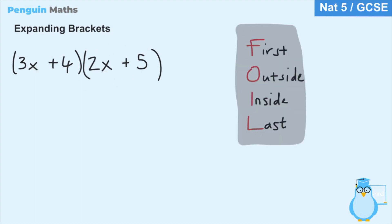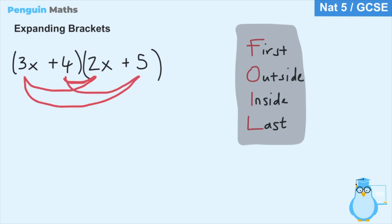The easiest way to do this is by following FOIL, which stands for first, outside, inside, and last. First means we multiply the two first terms within the brackets. Outside means we multiply the two outside terms — 3x and 5. Inside means we multiply the two inside terms — 4 and 2x. And last represents the last two terms — 4 and 5. By following this method with two terms in each bracket, we multiply everything by everything in the other bracket.